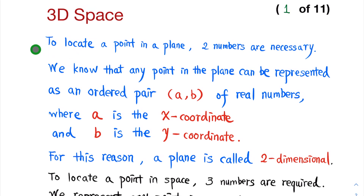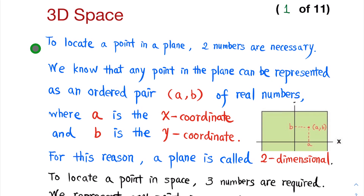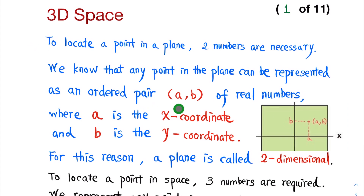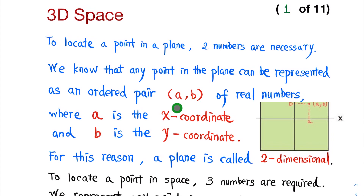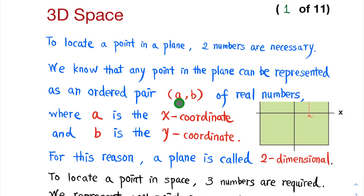To locate a point in a plane, two numbers are necessary. We know that any point in the plane can be represented as an ordered pair, where A and B are real numbers. A is the x-coordinate and B is the y-coordinate. For this reason, a plane is called two-dimensional.